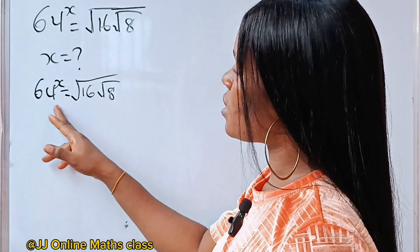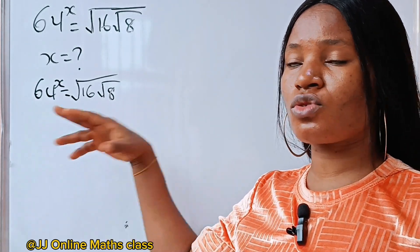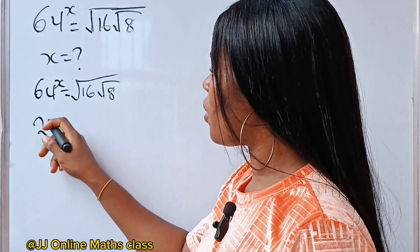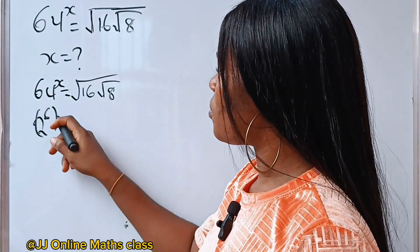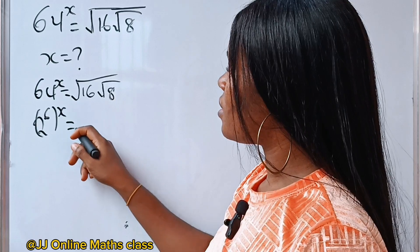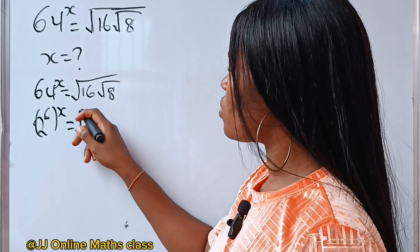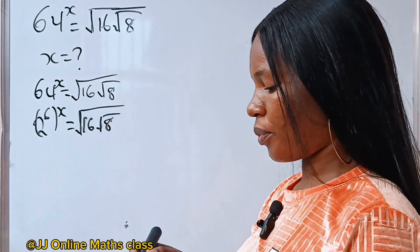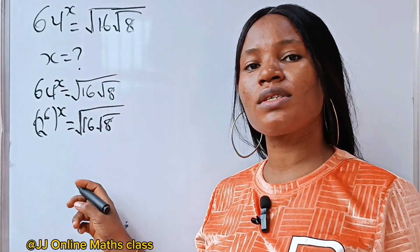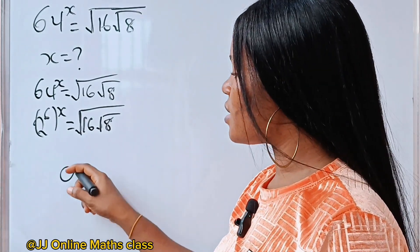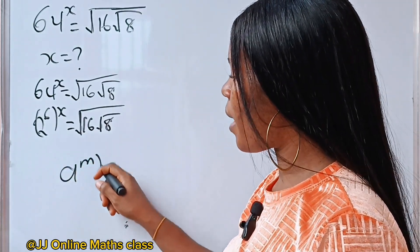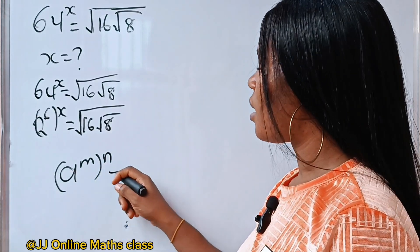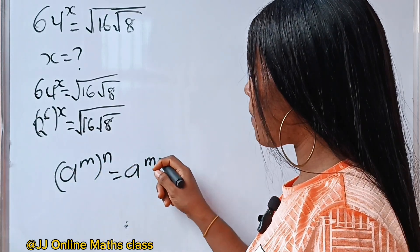First of all, 64 is 2 to the power of 6. So we have 2 to the power of 6, to the power of x, is equal to square root of 16 root 8. Recall the law of indices that states that a to the power of m, raised to the power of n, is equal to a to the power of m times n.